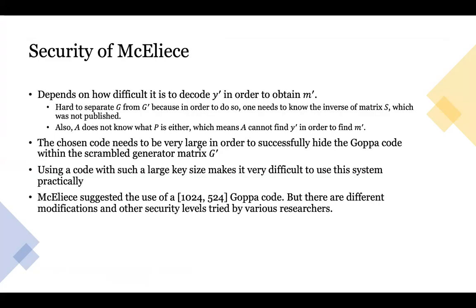Now let's analyze the security of the system. It really depends on how difficult it is to decode Y' to obtain M'. We assume it's hard to separate G from G' because you need S and P, neither of which was published. However, the chosen code needs to be large to hide the Goppa code within the scrambled generator matrix. This is not very practical because using such large keys makes the system inefficient and difficult to use. The original suggestion was to use a 1024 by 524 Goppa code, but there are different modifications with tweaked security levels that exist.